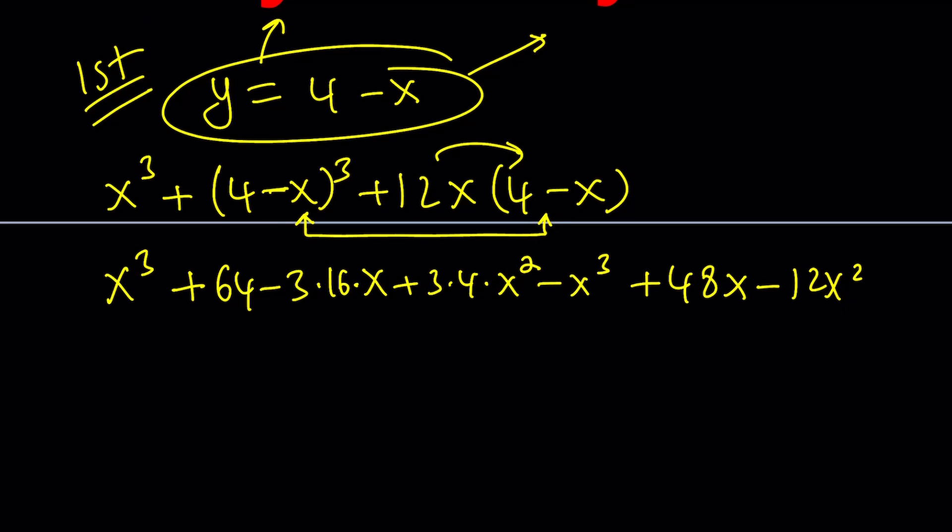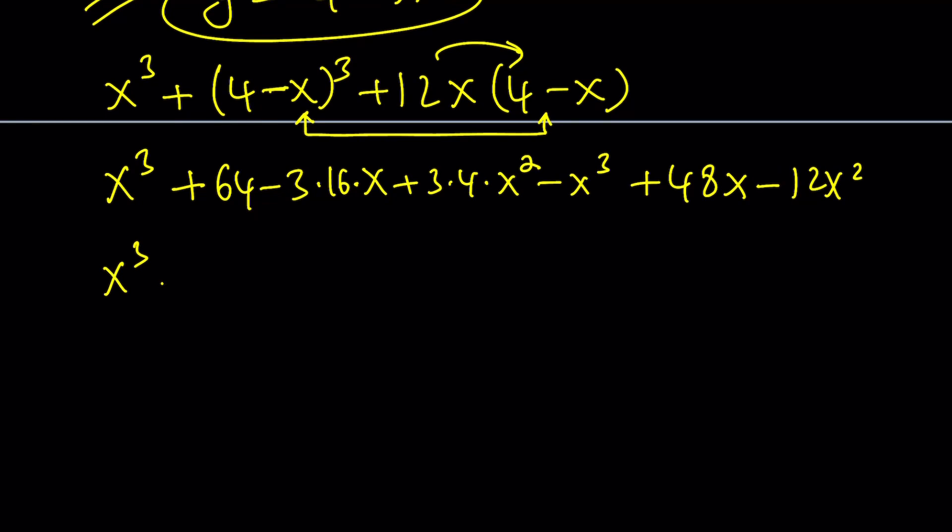Let's simplify this expression. x³ + 64 - 48x—3 times 16 is 48—12x², minus x³ + 48x - 12x². Now, hopefully you see what I see. Do you? We're going to simplify this.